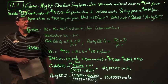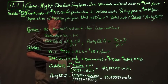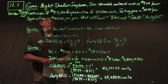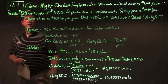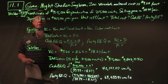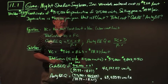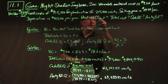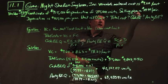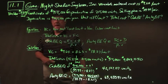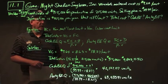In problem 11.1, we're given that Nightshade Sunglasses Inc. has variable material cost of $9.64 per unit, variable labor of $8.63 per unit, fixed cost of $915,000 for production of 215,000 units. Selling price is $39.99 a pair, and depreciation is $465,000 a year.